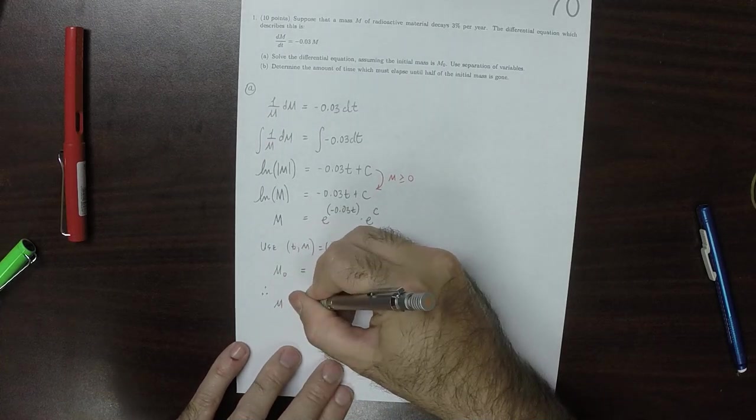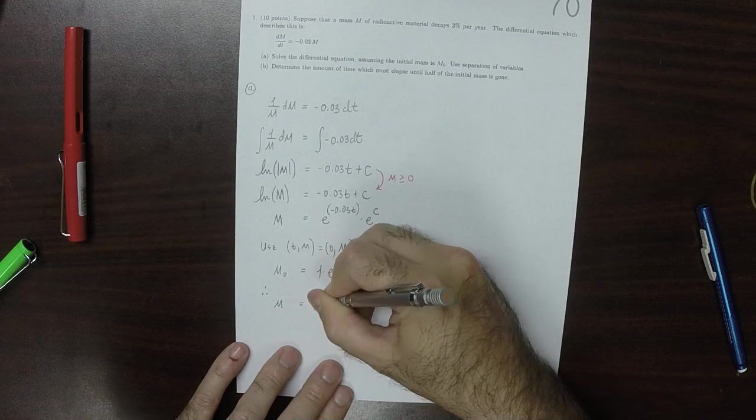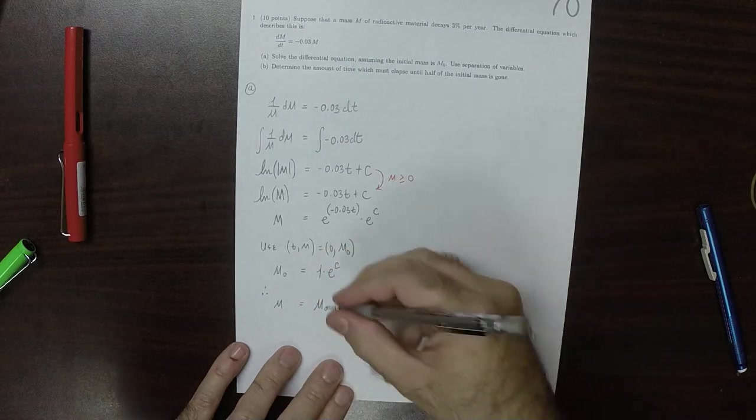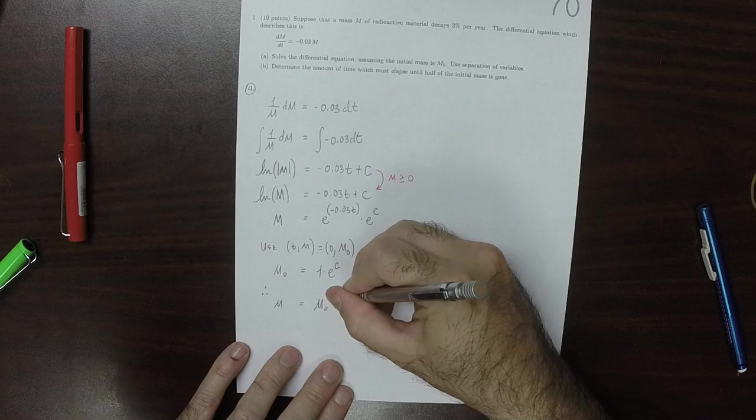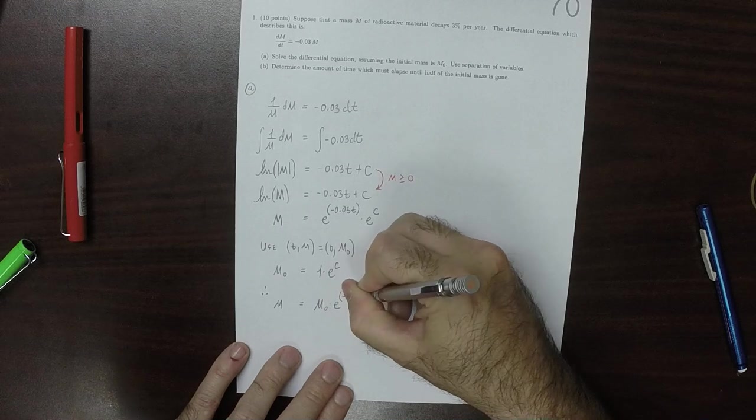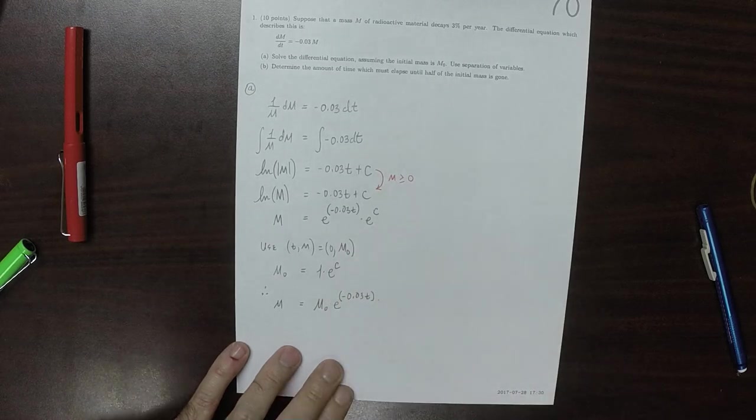And therefore the mass is the original mass, m0 exponential of negative 0.03 dT.